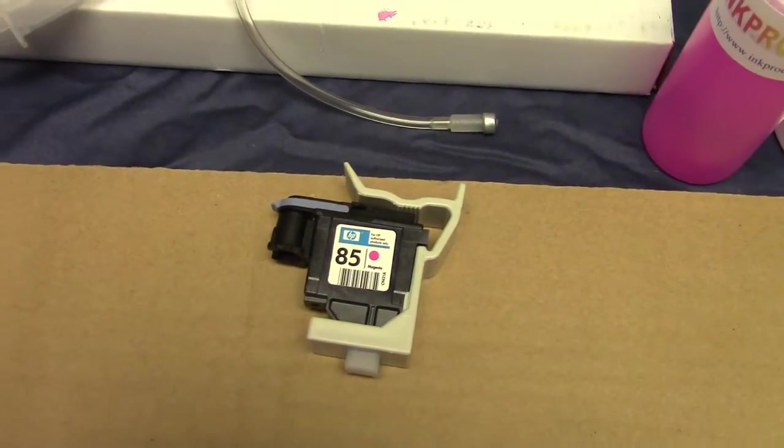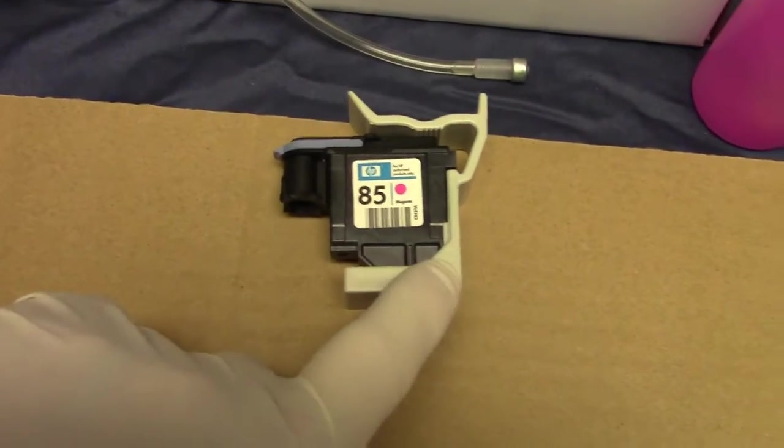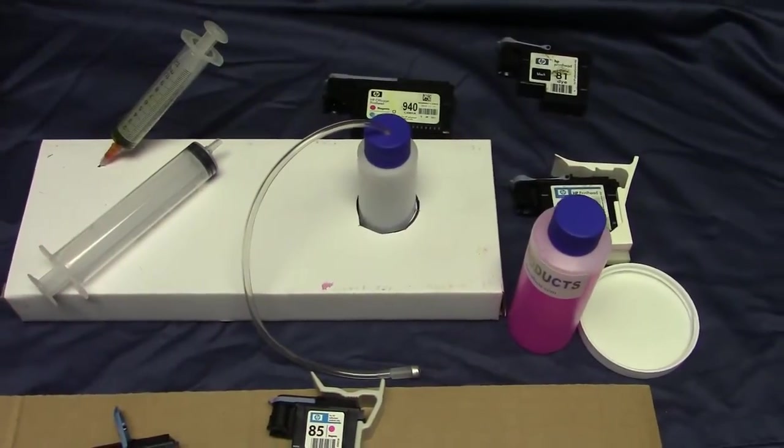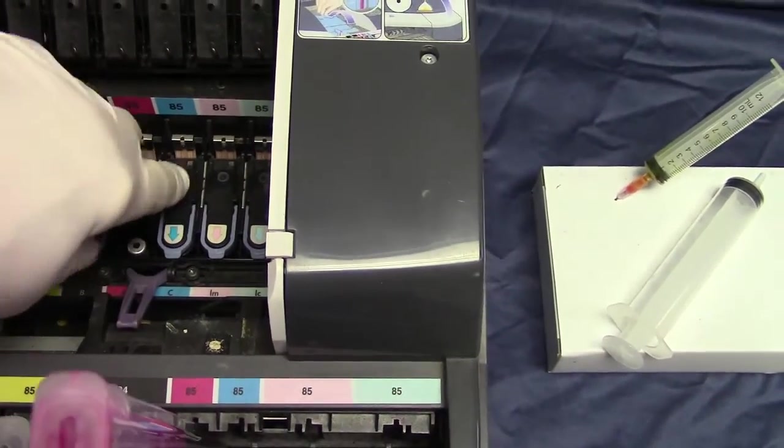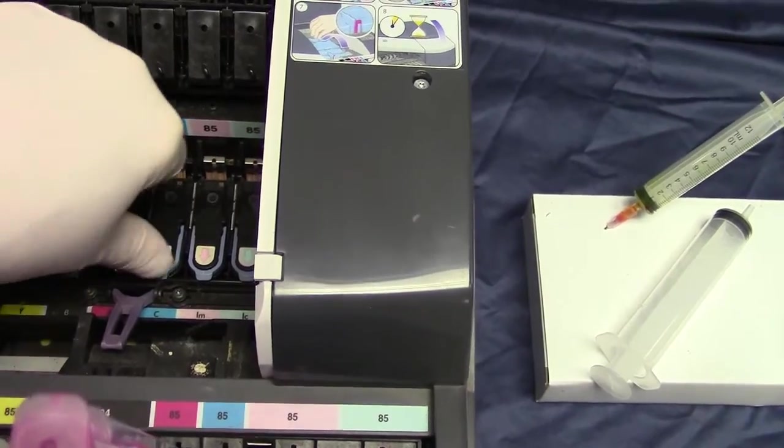We have a little tool that we're going to give you called a snap-on prime tool. First, what I do is I take out the print heads and just reach in there. This is a DesignJet 130, but it's all the same no matter what it is.